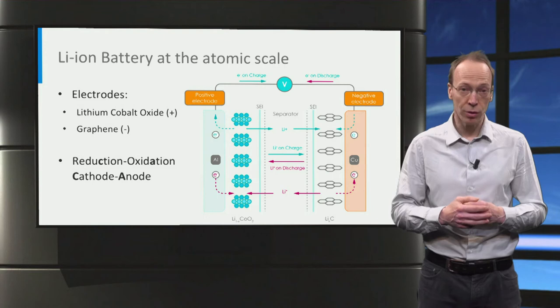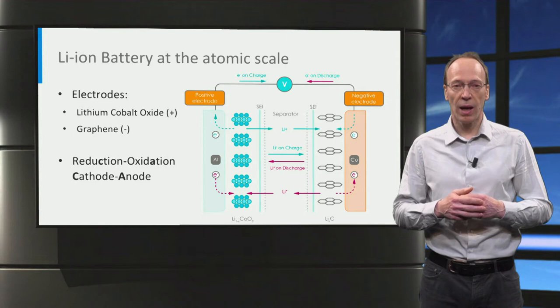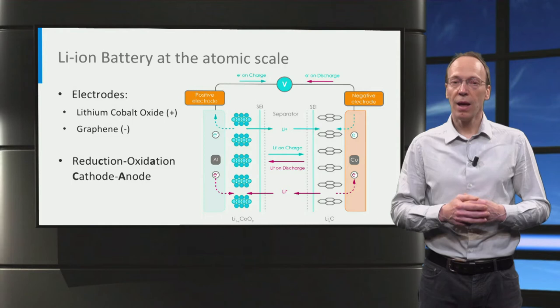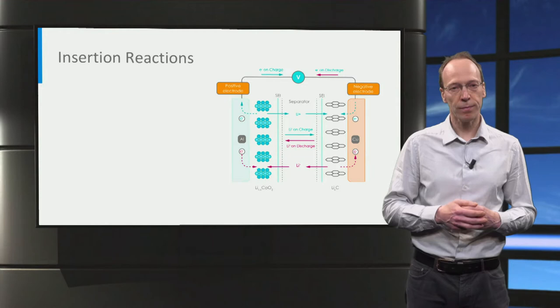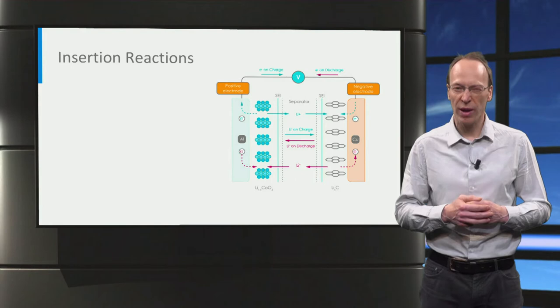Now we are going to relate the atomic scale properties of the electrode materials to the microscopic performance parameters of batteries. Let's start with capacity, voltage, and energy density. The chemical reactions that occur in batteries involve electron transfer, which are called redox reactions, referring to reduction and oxidation.